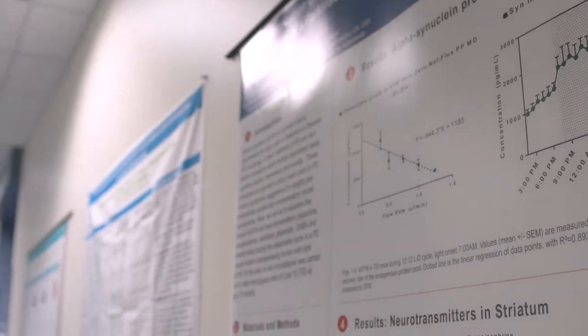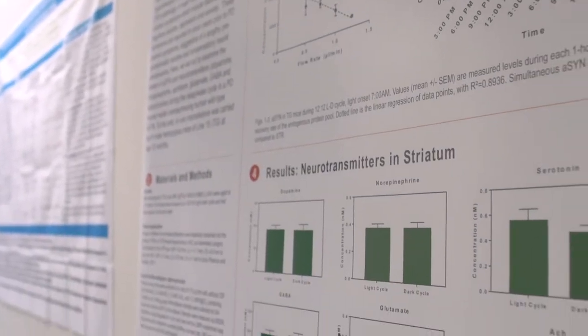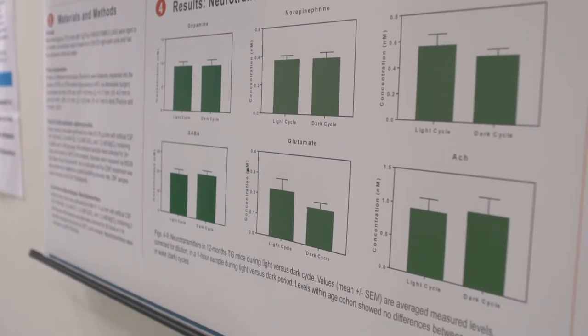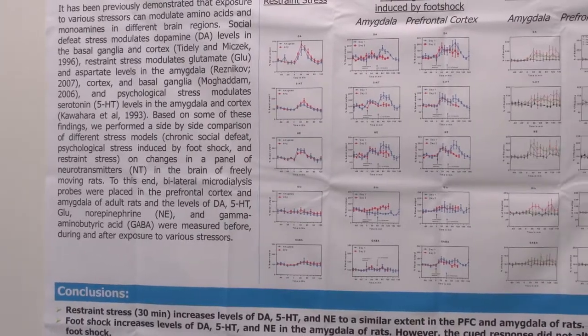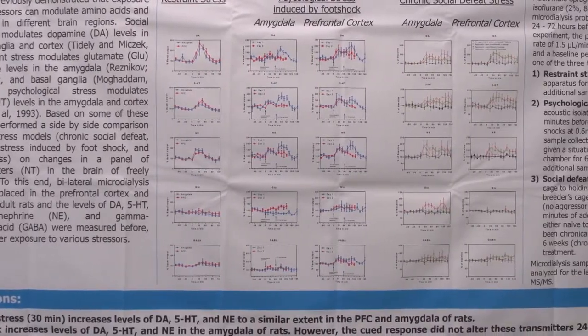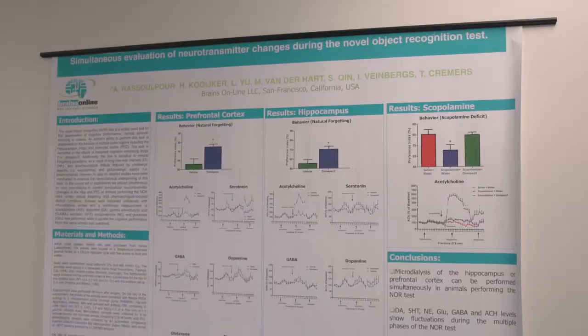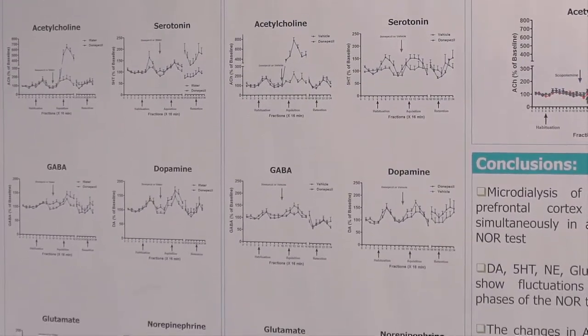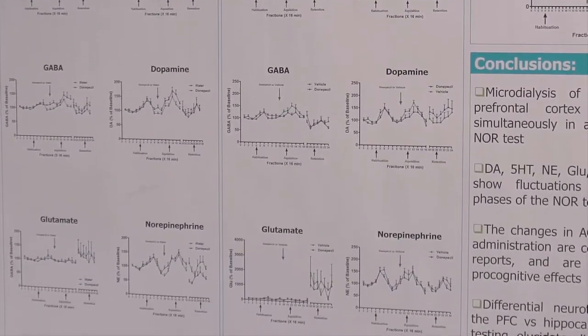We can measure a lot of different things using microdialysis. We can measure neurotransmitters, looking at serotonin, dopamine, and norepinephrine. We can also measure other analytes that are in the brain such as kynurenine and its metabolites, as well as exogenous compounds such as client compounds. We can measure the PK of compounds that are being administered to the animals over time.